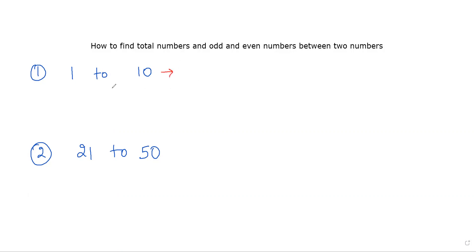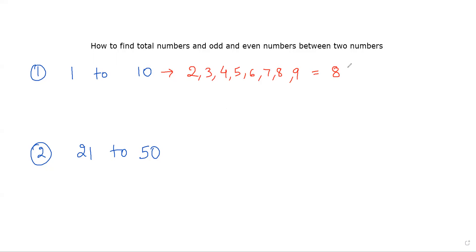This is very easy actually. If I write the numbers between 1 to 10, I can write: 2, 3, 4, 5, 6, 7, 8, and 9. So there are total 8 numbers between 1 to 10. For the even numbers, I simply divide by 2 — 8 divided by 2 is 4 — so there are 4 even numbers.